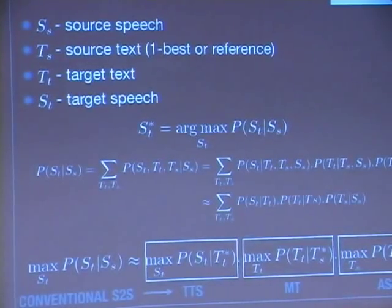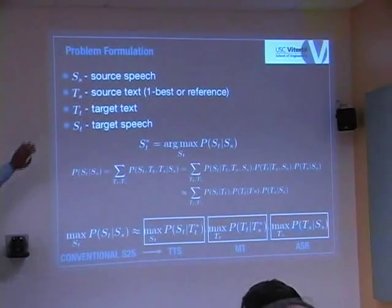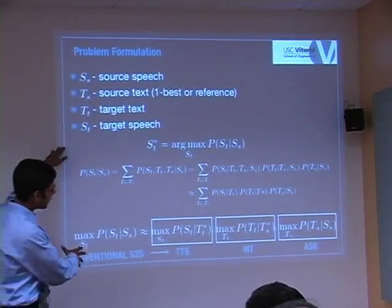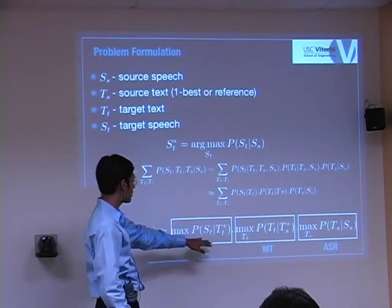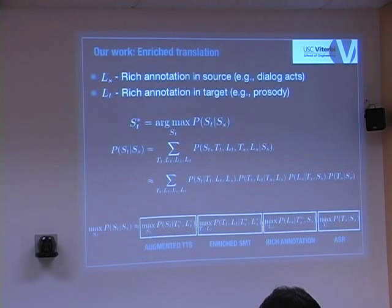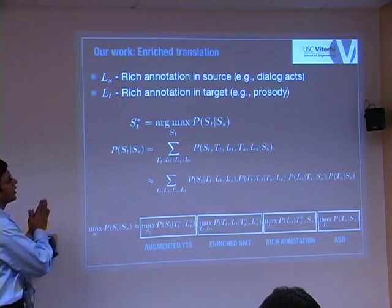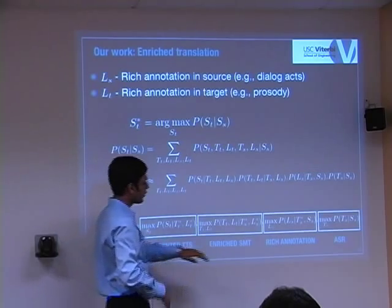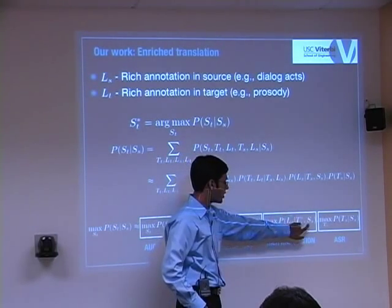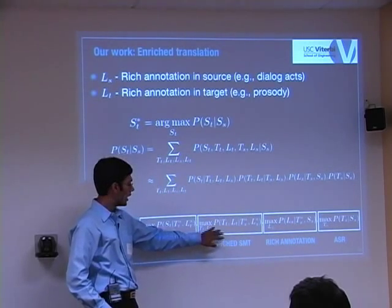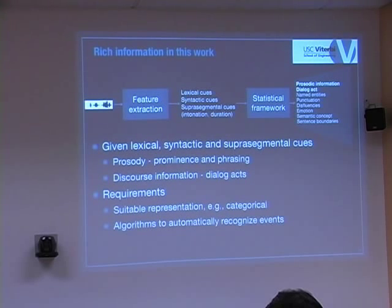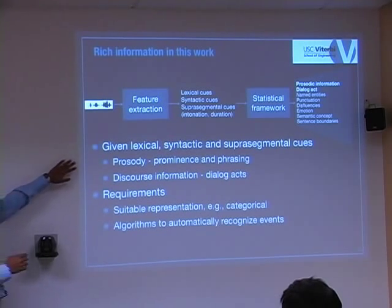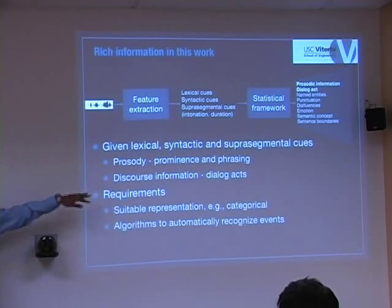The basic problem formulation: you have a source speech signal and want to get to the target speech. The compartmentalized approach converts source speech to source text using ASR, then to target text using machine translation, then synthesizes using TTS. In contrast, what we are interested in doing is — at the output of ASR — inferring rich annotations from both speech and text information, using these annotations within the machine translation framework, and supplementing them for TTS. We restrict ourselves to two kinds of rich information: prosonic information and discourse information captured through dialogue tags.